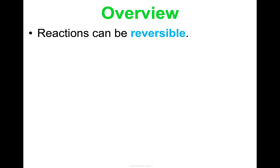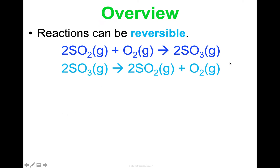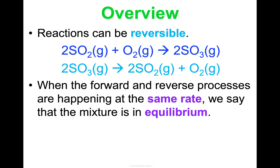Reactions can be reversible given the conditions surrounding the reaction. For example, sulfur dioxide and oxygen gas can react to make sulfur trioxide — that's a synthesis reaction. But it can also be reversed: sulfur trioxide can decompose into sulfur dioxide and oxygen gas. Equilibrium is when the forward reaction and the reverse reaction are happening at the same rate in a system — both happening at the same time and at the same speed. We would then say the system is in equilibrium.